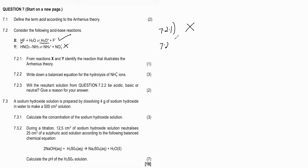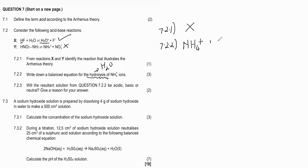7.2.2 says: write down a balanced equation for the hydrolysis of NH₄⁺ ions (ammonium ions). Hydrolysis means react with water, so we take that particular ion, react it with water, and remember we must indicate that this will be a reversible reaction.